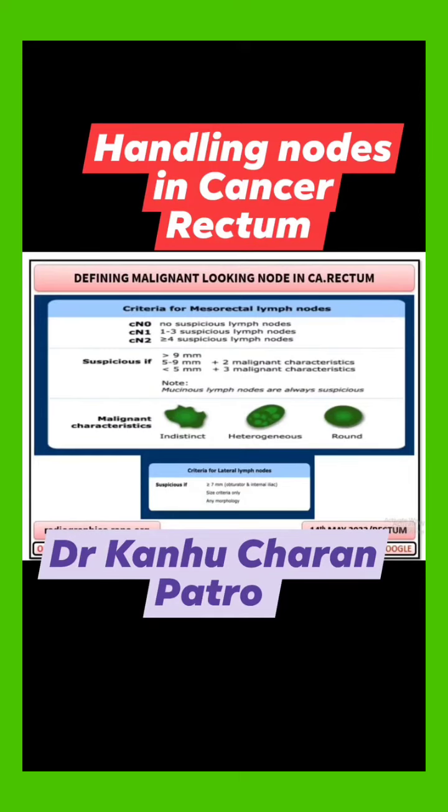That covers how to handle the mesorectal nodes. If you have an internal iliac node or an obturator node, any shape, any size — if it is more than 7 mm, it is taken as positive.